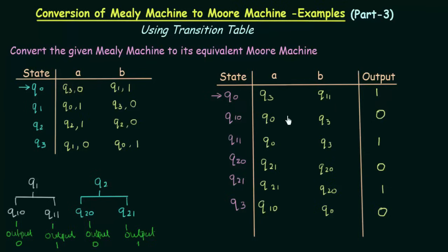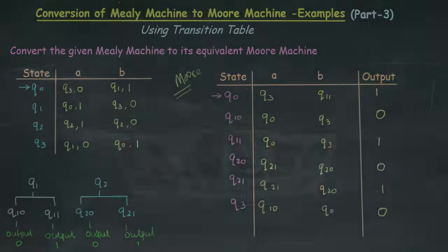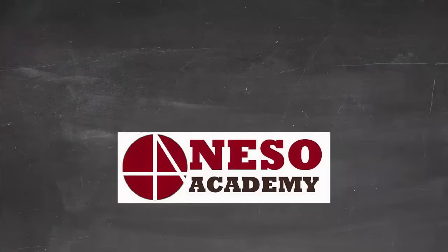Now this becomes a complete transition table for the Moore machine. We have successfully converted the Mealy machine to the Moore machine using the transition table. I hope this was clear to you. Thank you for watching and see you in the next one.